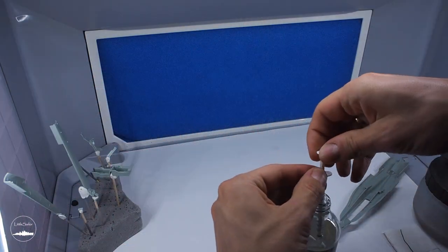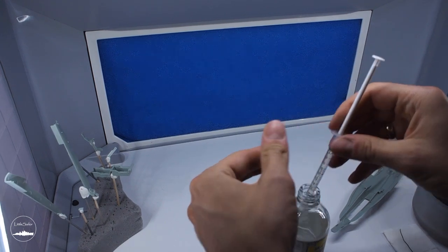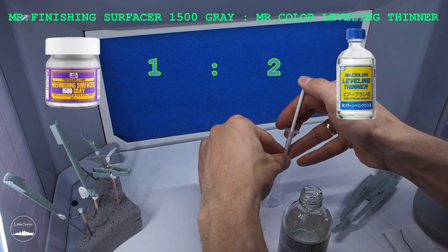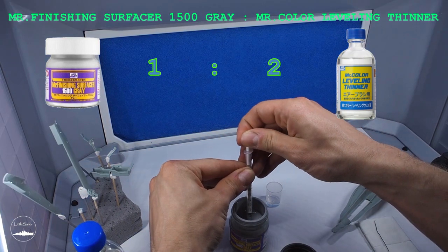The time has come for the first modular brush painting. As a primer I used grey Mr. Finishing Surfacer 1500 diluted with Mr. Leveling Thinner in a proportion of about 1 to 2.